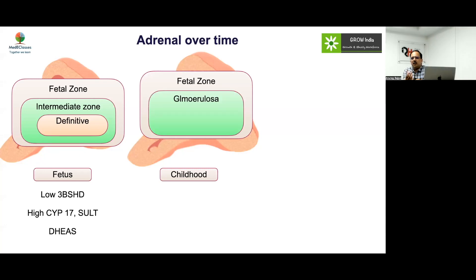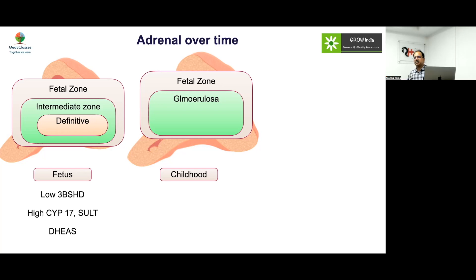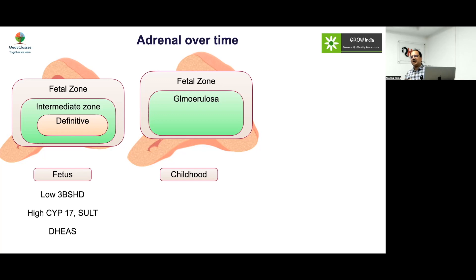After birth, the fetal zone involutes over a couple of months. During this postnatal period, persistent high 17-hydroxylase activity causes abnormal circulating steroids and high levels of sulfated products. These sulfated products are inactive but can give erroneous results on immunoassays. Therefore, in the first one to two months of life, adrenal hormone assays must use extraction to remove sulfation, and GC-MS based assays should be used rather than immunoassays, since GC-MS is structure-based rather than immune-based.